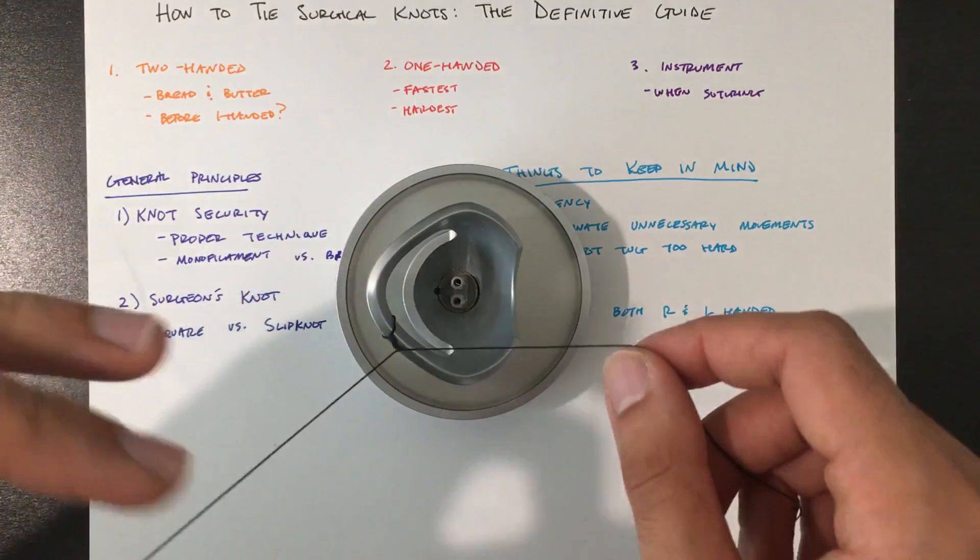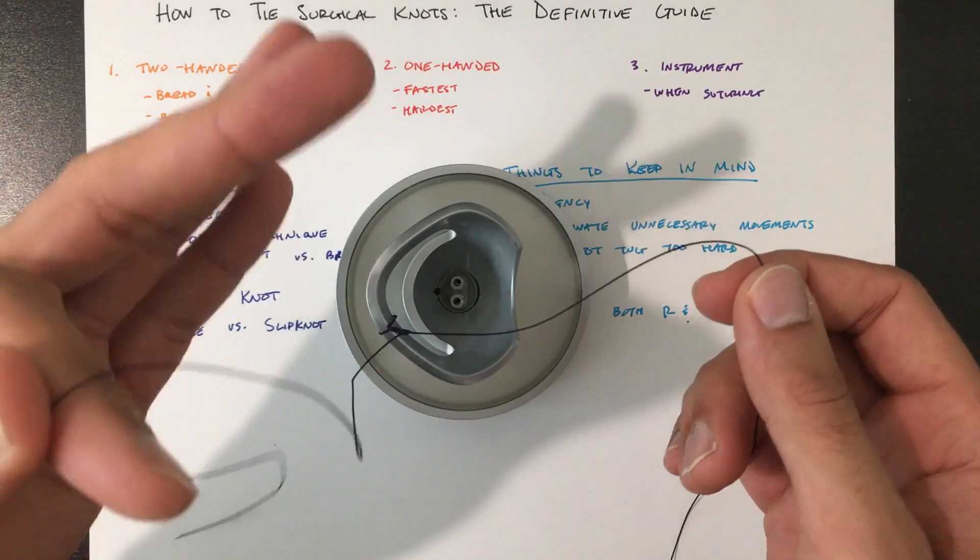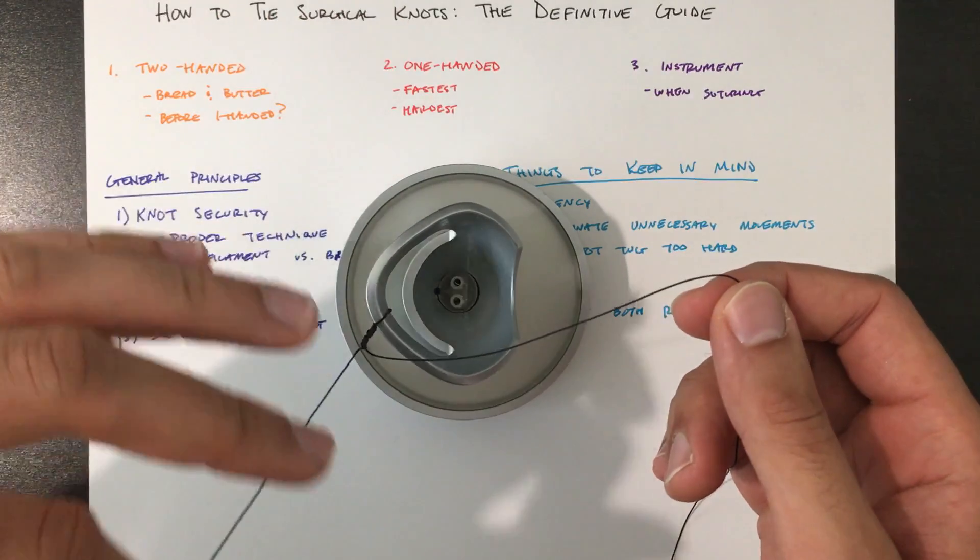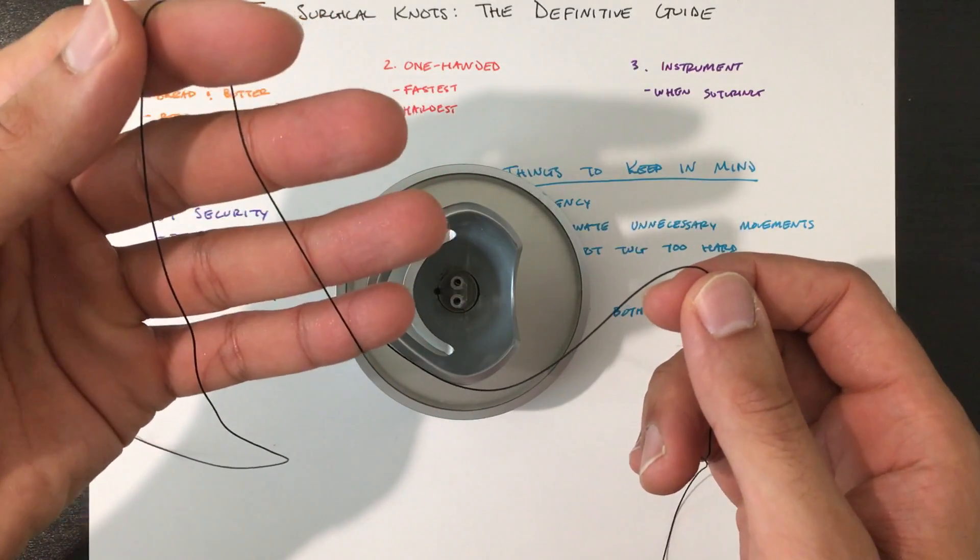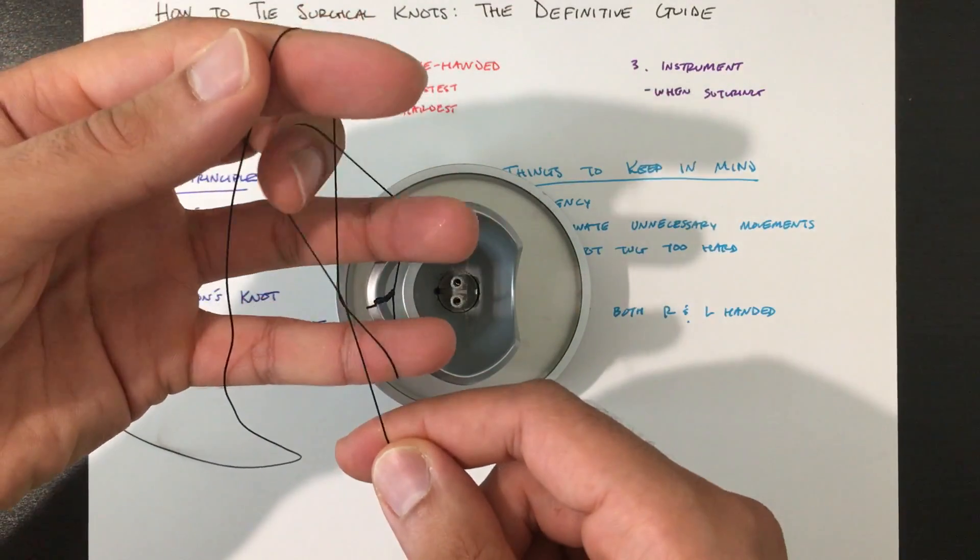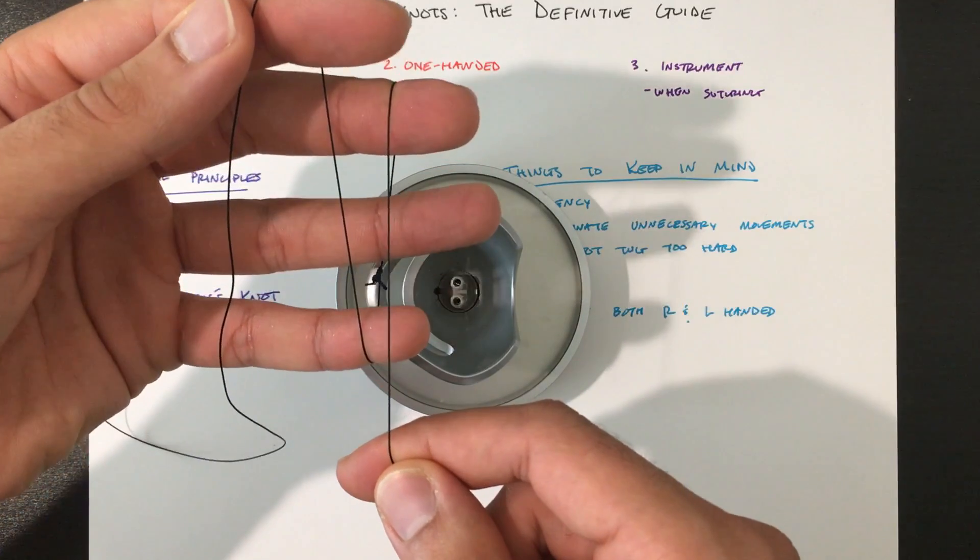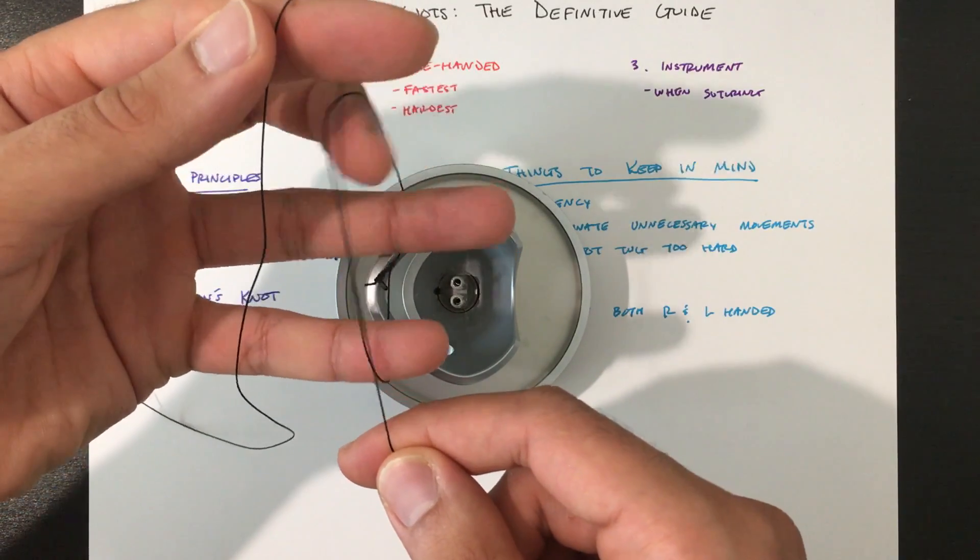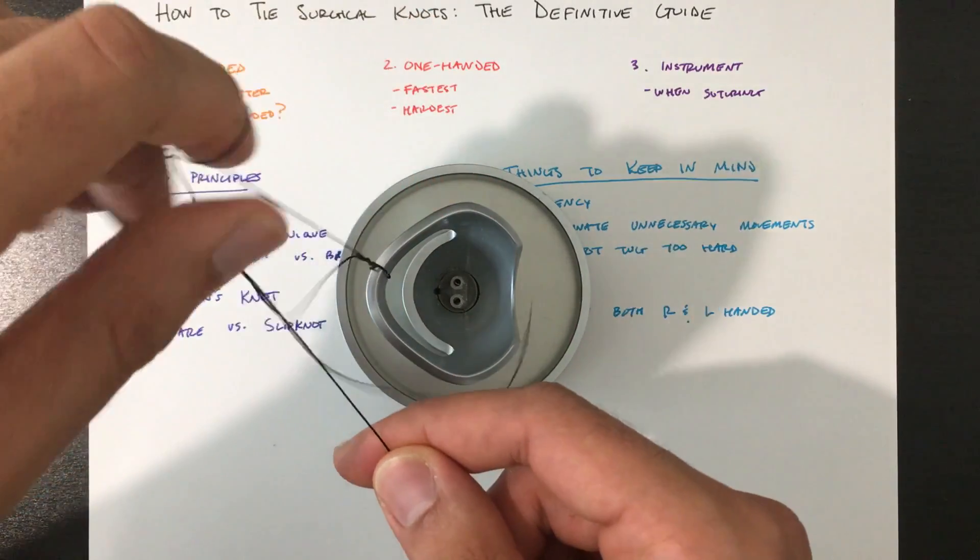Now let's do the left side. So same exact thing. Index finger. Three fingers behind. Take the other side. Put it in the opposite direction. And again using your middle finger to grab the first side, bring it through.